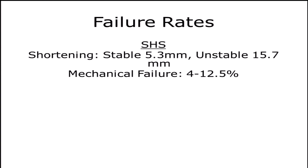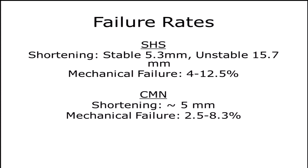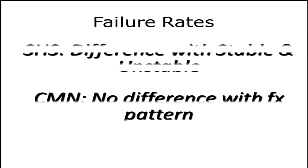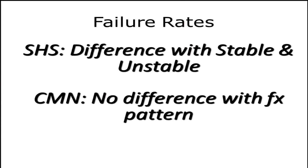Let's talk about failure rates. For the sliding hip screw in stable intertrochanteric femur fractures, there's a failure rate of about 4 to 12.5%, depending. In unstable fractures, you get a fair amount of shortening. For nails, it's about the same. But the key takeaway is that for sliding hip screws there's a difference between stable and unstable intertrochanteric femur fractures. For cephalomedullary devices, there is no difference — the fracture pattern really doesn't matter.